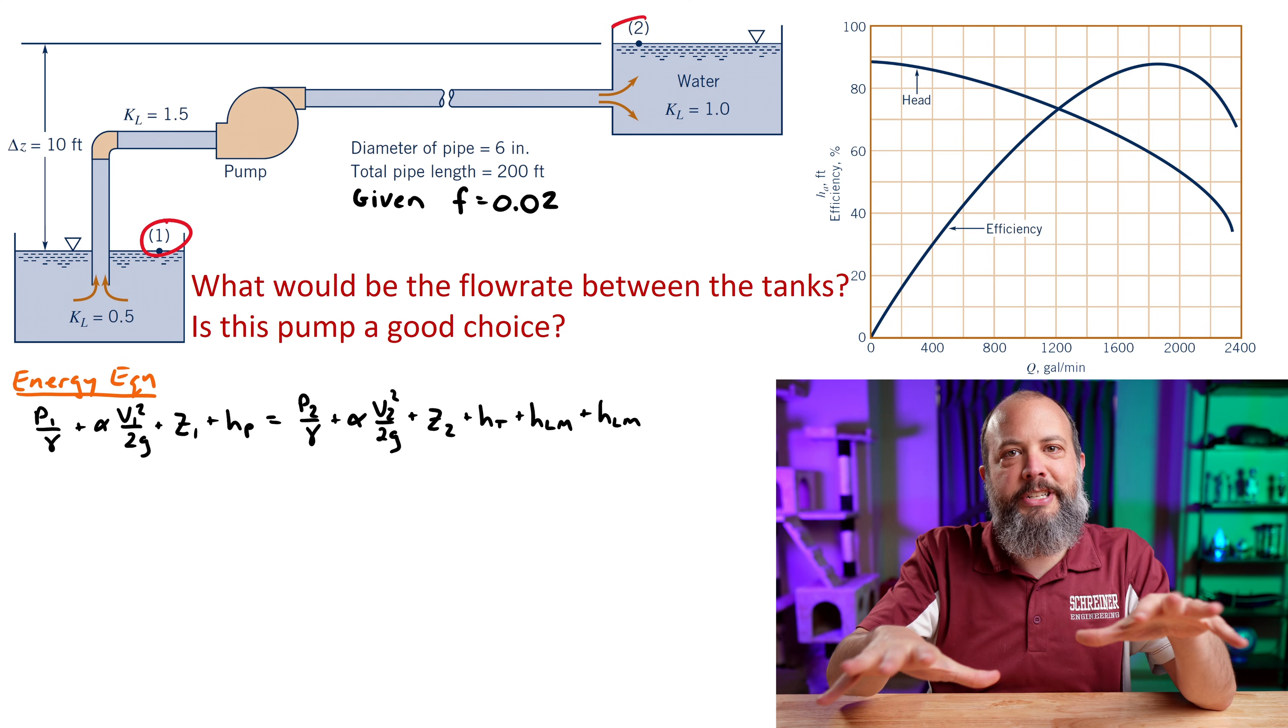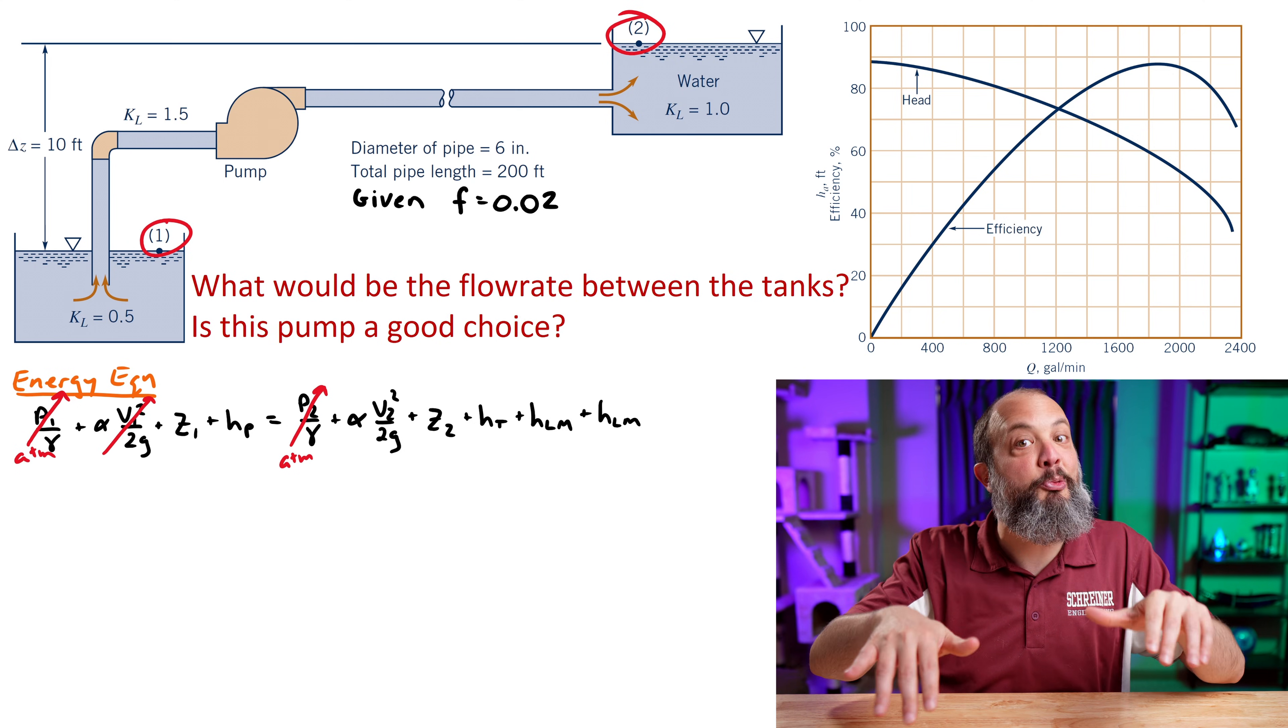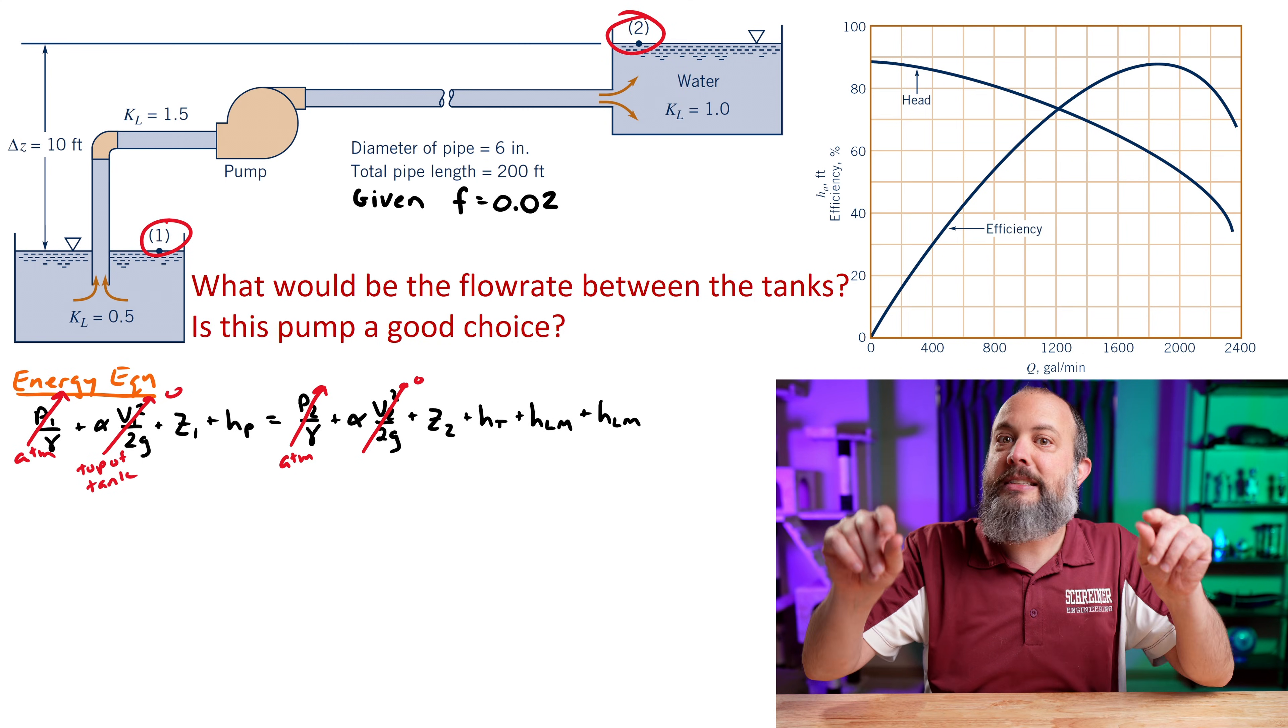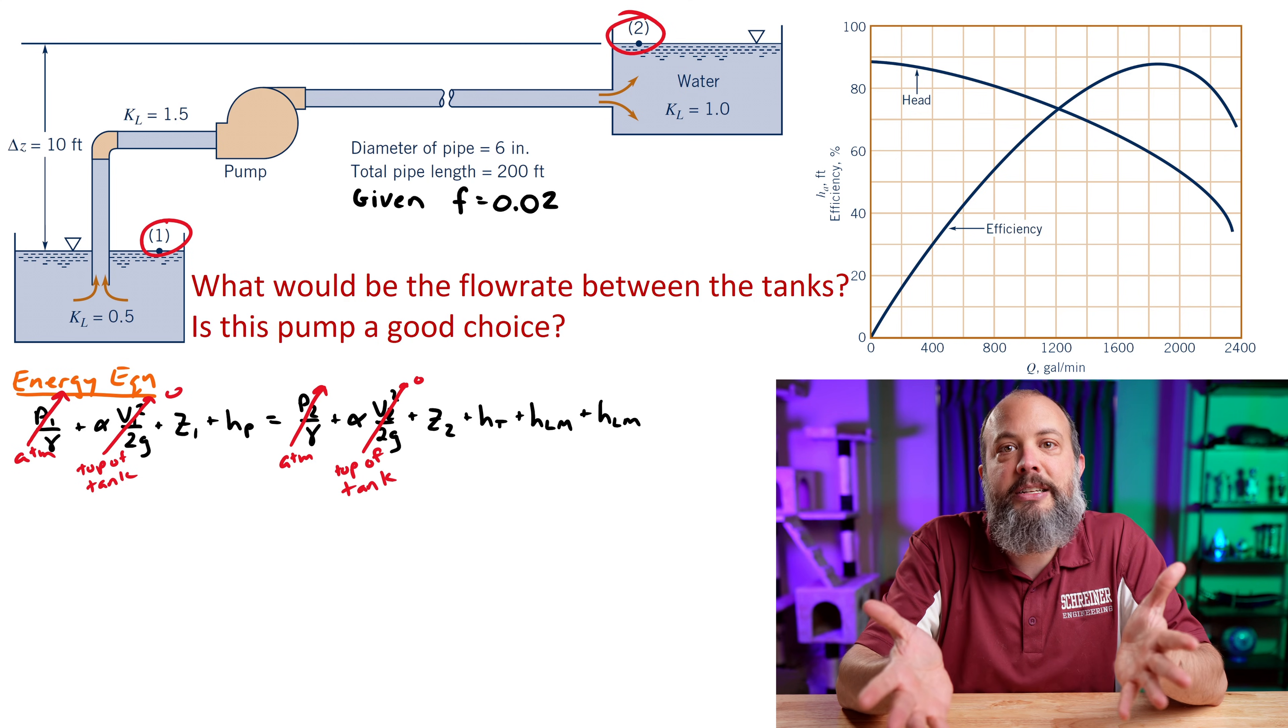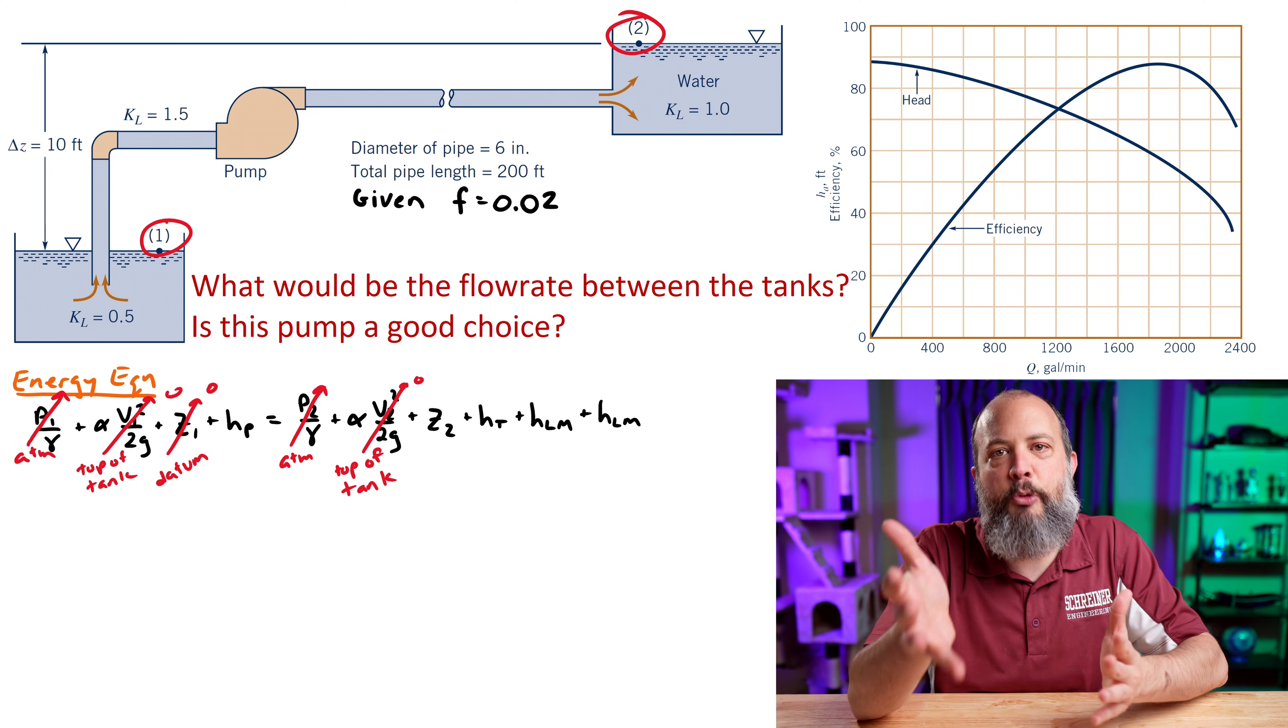So since both points 1 and 2 are the top of a tank, we can cancel out pressure. Both sides will be at atmospheric pressure. If we assume that the tanks are rising and falling their levels very slowly, even though there's velocity happening in the pipes in between them, the velocities of the tanks themselves would be approximately 0, so we can cross off the velocity terms of the Bernoulli equation.